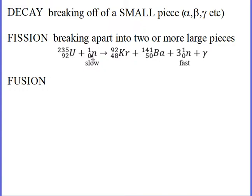Uranium-92 combines with a slow neutron — the slow, it turns out, is very important to us. This would get us up to the isotope of uranium which is 236. It is not stable and it breaks apart into two large pieces. This ought to add up to 92 here, so maybe this is like 40 and this is 52, something like that.